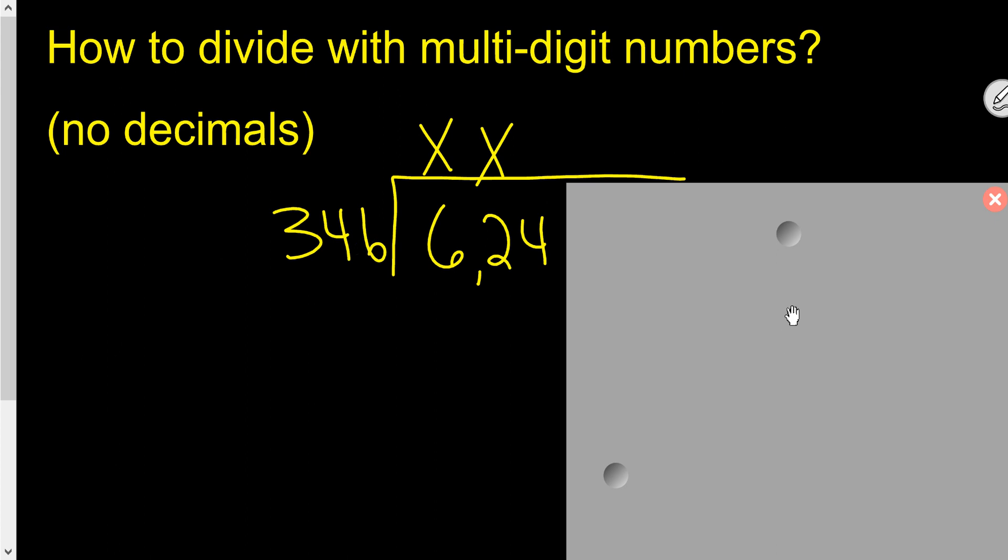Yeah, I know it can go in once, but can it go in twice? So off to the side of your paper, you write 346 times 2. I got 692.